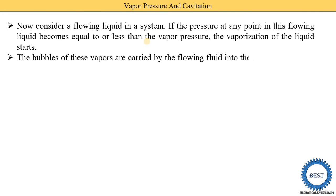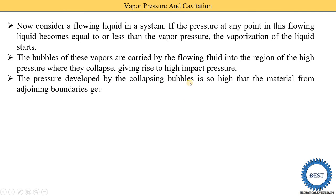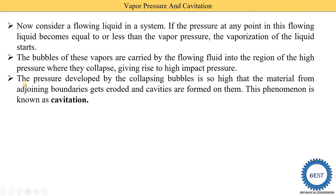These bubbles of vapor are carried away by the flowing liquid into a region of high pressure, where they collapse, giving rise to very high impact pressures. The vapor bubbles are created in the low-pressure region, flow with the liquid, and upon reaching the high-pressure region they collapse. When these vapor bubbles collapse, the pressure developed is so high that material from adjoining boundaries gets eroded.